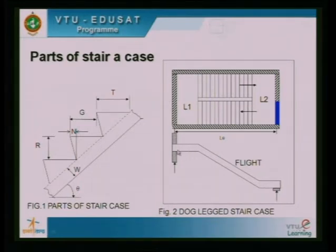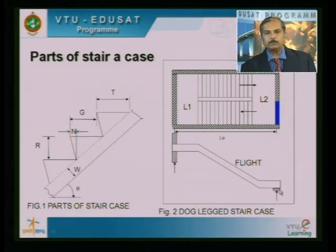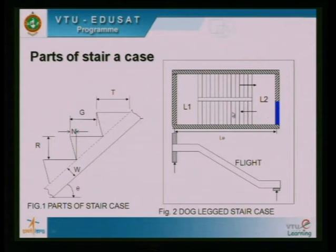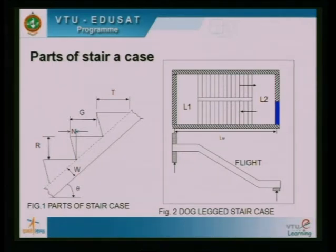The landing slab is supported at the end — at the outermost edge it is supported on the wall. Similarly, this landing is also supported at its outer edge. The staircase room is under this area. This is landing one — the top landing — and this is the bottom landing L2. This is how we will be climbing, coming to landing one and then going to landing two on the next floor, with a small gap between the two flights.